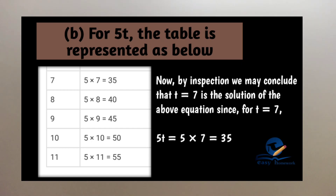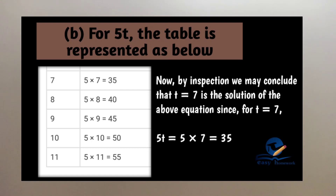Next, T equals 8, 9, 10, 11. Then 5 into 8 is equal to 40, 5 into 9 is equal to 45, 5 into 10 is equal to 50, 5 into 11 is equal to 55.